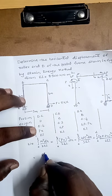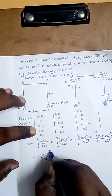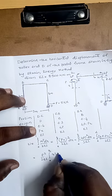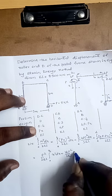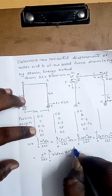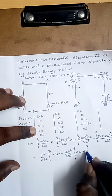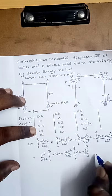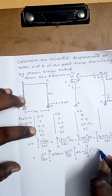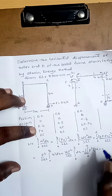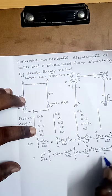This gives P²/2EI × ∫₀⁴ x²dx, plus 16P²/2EI × ∫₀³ dx, plus for the last portion (0 to 4), expanding (4P − PX)² = P²(16 − 8X + X²), so the term is 1/2EI × P²(16 − 8X + X²)dx.